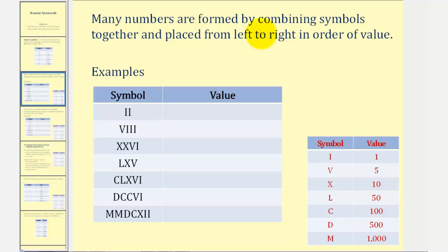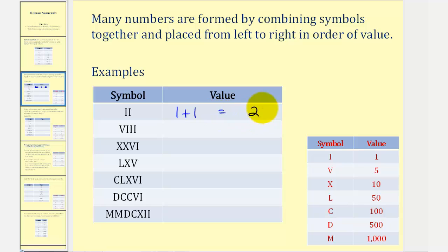Many numbers are formed by combining symbols together and placed from left to right in order of value. Notice in this first example, we have two capital I's, each of which are equal to one. So we add these — one plus one is equal to two. These are ordered from greatest value to least value.